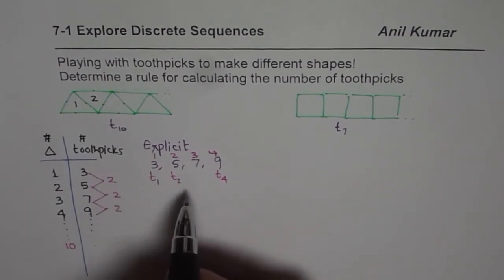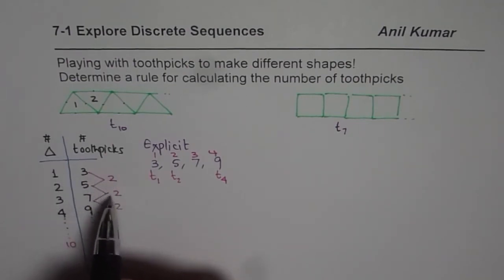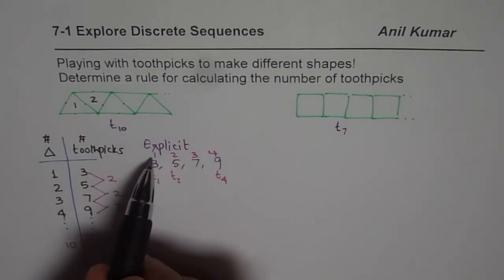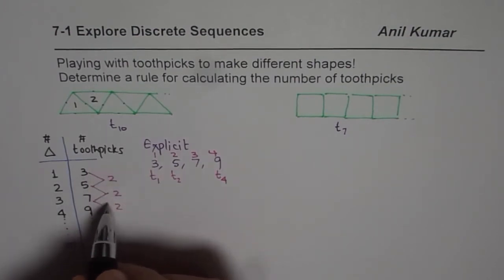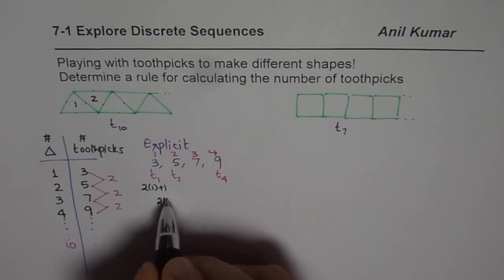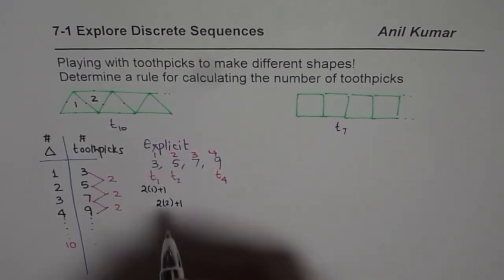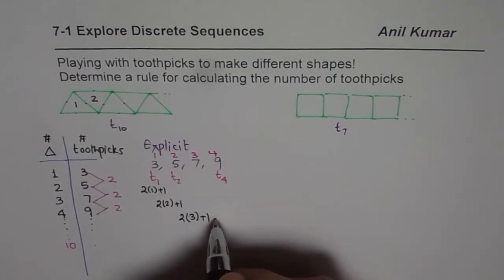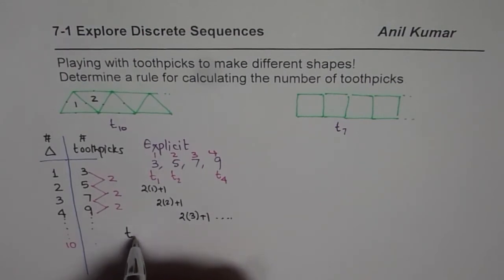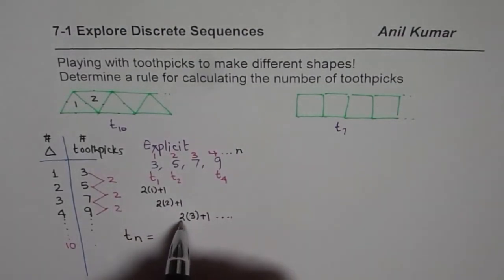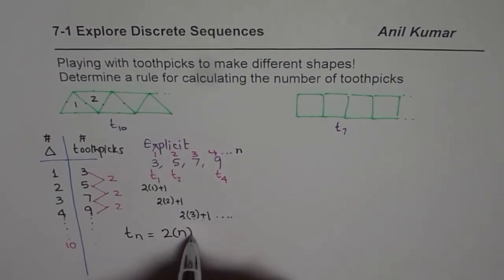Now, how to get this formula? What we notice is that every time we need two more. That means we multiply by two. How do I get three? I get three by adding one — so two times one plus one is three. Two times two plus one is five. The third term: two times three plus one. Likewise, if I want to get the nth term — that is, the formula for Tn — it should be two times n plus one.